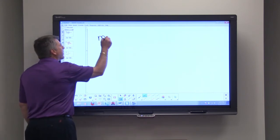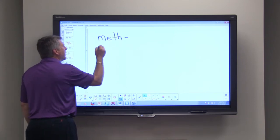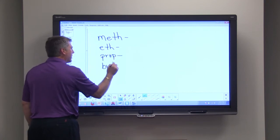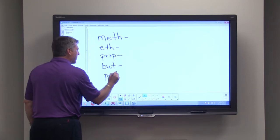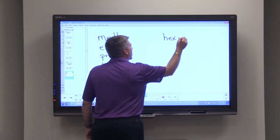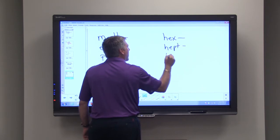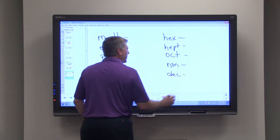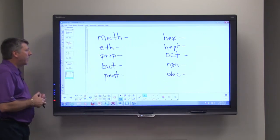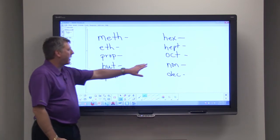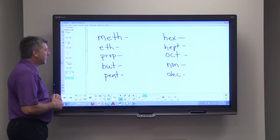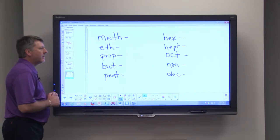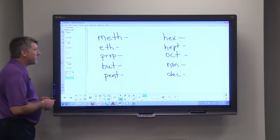Now I just want to write a few prefixes up here: meth, eth, prop, but, pent, hex, hept, oct, non, and dec. You may remember a lot of these prefixes from geometry classes. For example, an octagon has eight sides or a decagon has ten sides. The pentagon has five sides. So these are prefixes that give us a clue as to how many numbers of carbons we have in this situation.